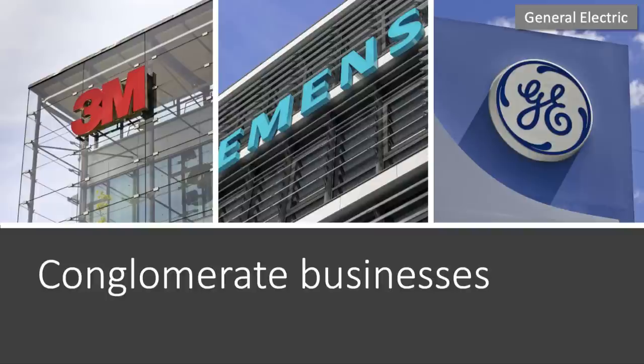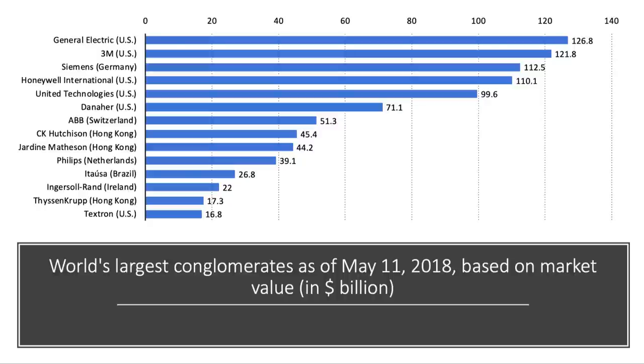Conglomerate businesses — good to have an example or two here. A conglomerate is a business with several significant business activities but in very diverse markets. The three examples I've chosen are 3M, Siemens from Germany, and General Electric. This chart shows the world's biggest conglomerates as of May 2018 based on market value. They also include Philips from Holland and Honeywell International from the United States.